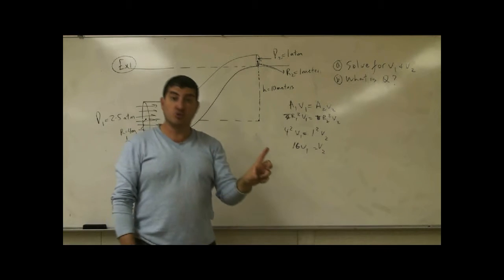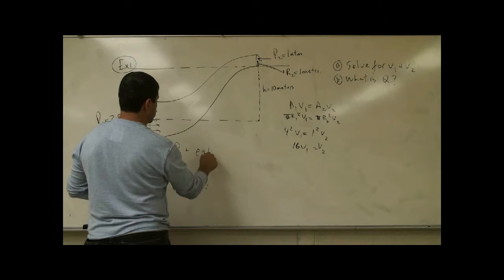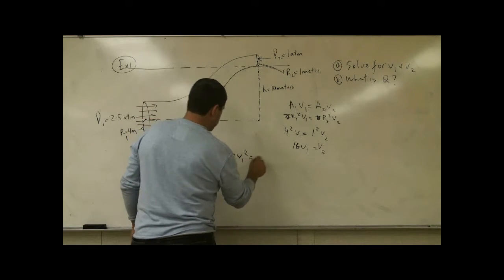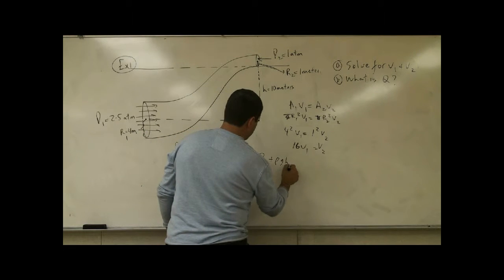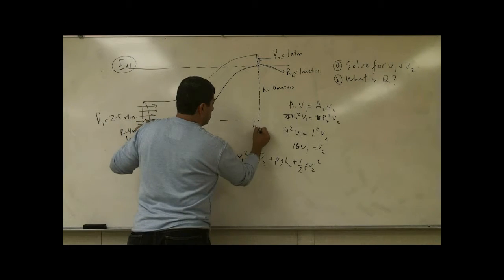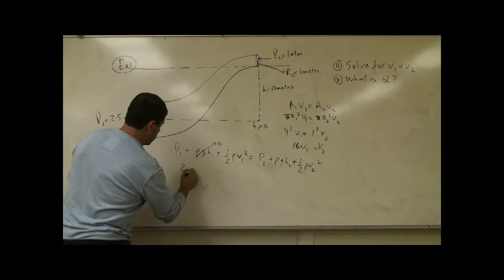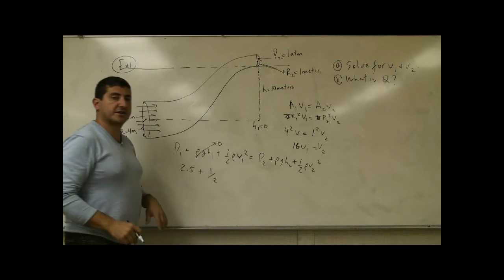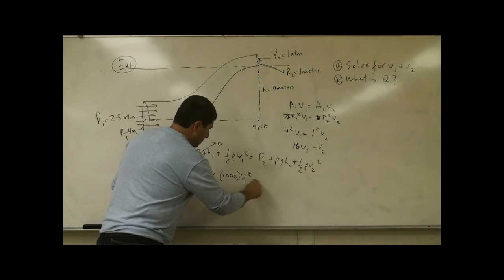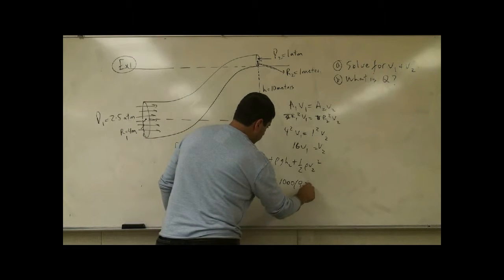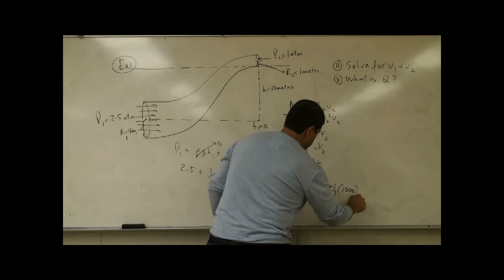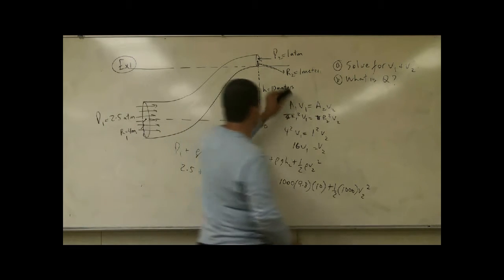So now let's utilize Bernoulli's equation. Pressure P1 plus density rho g H1 plus half rho V1 squared is equal to P2 plus rho g H2 plus half rho V2 squared. In this case, I can define the center of this tube as H1. So that's just equal to zero. This one is two and a half atmospheres. What's the density of water? The rho, that's equal to 1,000 kg per cubic meter. So you just put 1,000 atmosphere and then you put here 1,000, 9.8 H2 and H2 is the 10 meters plus half 1,000 V2 squared. Okay, so let's break that down over here.